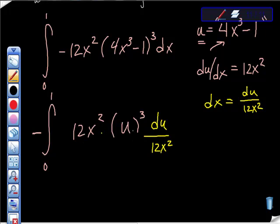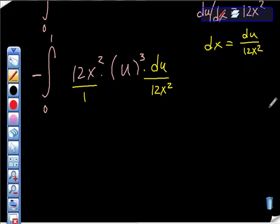So I have du over 12x². And hopefully you can see that these are all factors, and this is over 1, so hopefully you can see that this and this cancel out. So it starts to look really good. Okay, this is good, so I get this, and you would get, this cancels and this cancels,